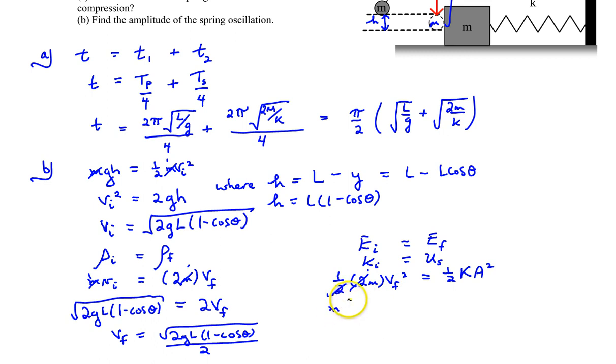And we can substitute in our final velocity, M V_final squared. So it's the root of 2GL(1 - cos θ) divided by 2 quantity squared equals (1/2)KA².